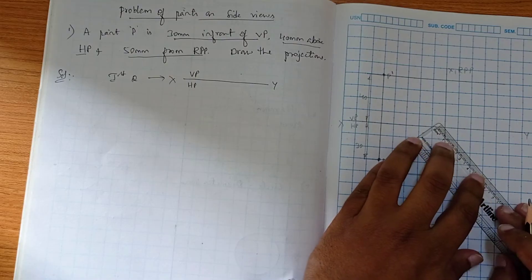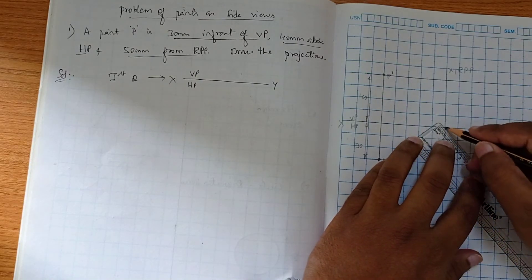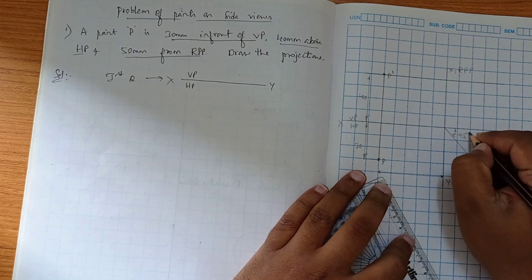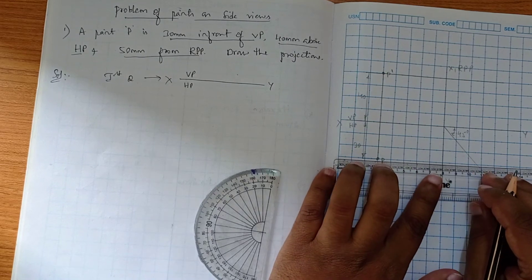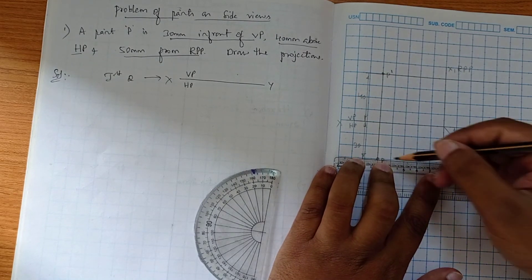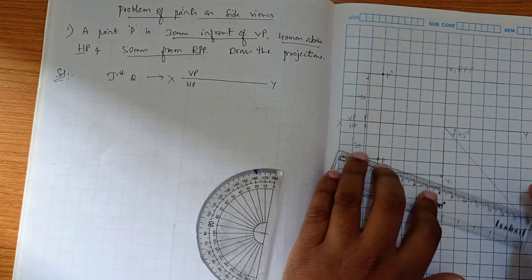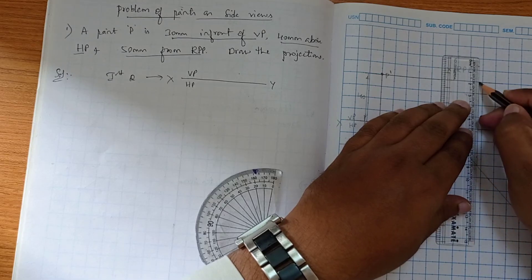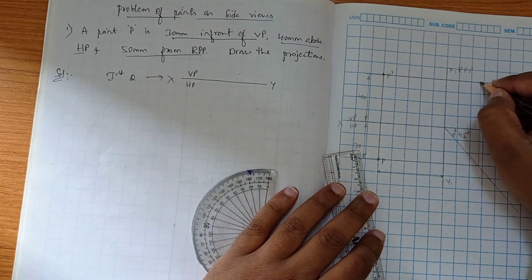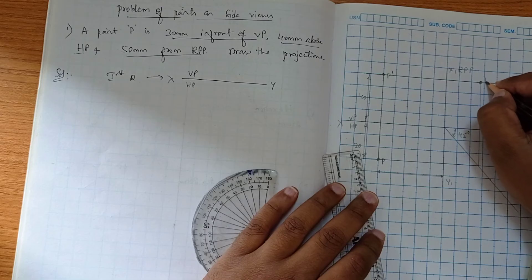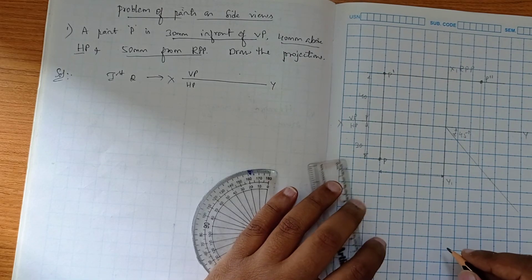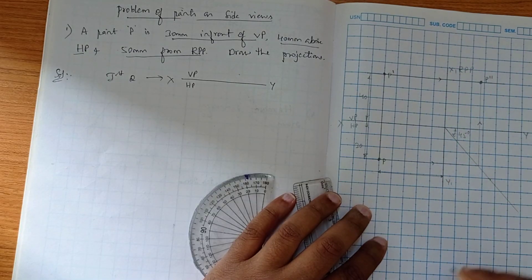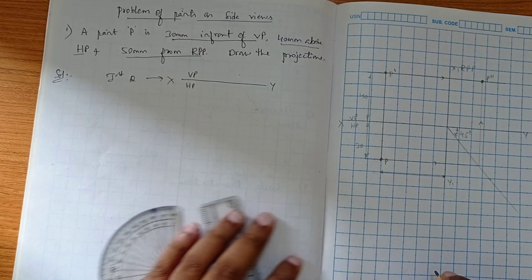Now from this top view, you'll be drawing a straight line until it touches the 45 degree line, then we project upward. Where these two lines are intersecting, this point is our side view. This is what this, and we can show the direction of the projection line. This is what the side view.